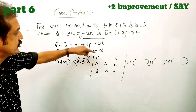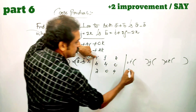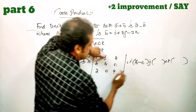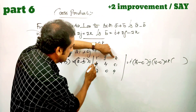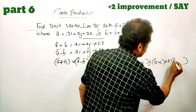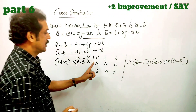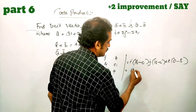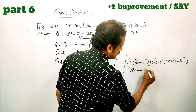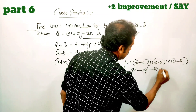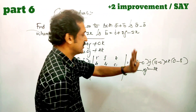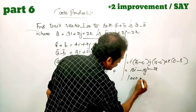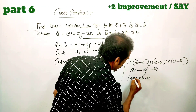Okay, i into the minor: 16 minus 0. Then minus j into the minor: 14 minus 2. Then k into the minor: 0 minus 8. Giving 16i minus 16j minus 8k. The modulus: root of 14 squared plus 16 squared plus 8 squared, which simplifies. This is the determinant of A plus B cross A minus B.